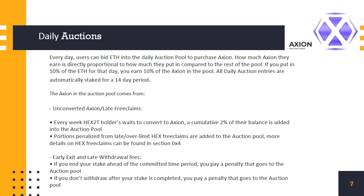80% of the ETH paid in the auction is then used to hyperdrive both the Axion token and the stakers' earnings. First, the ETH is used to purchase the tokens, boosting the token price, and then those tokens are distributed to stakers, creating a very strong positive feedback loop.